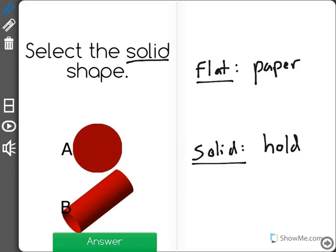Looking at the examples below, we can see that A looks more like a piece of paper, a flat shape, whereas B you could pick up and hold. It's a solid shape.